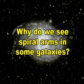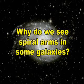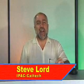Why do we see spiral arms in some galaxies? Spiral galaxies get their name from the shape of their disks, in which clouds of stars that we call spiral arms extend outward from the central nucleus of the galaxy.